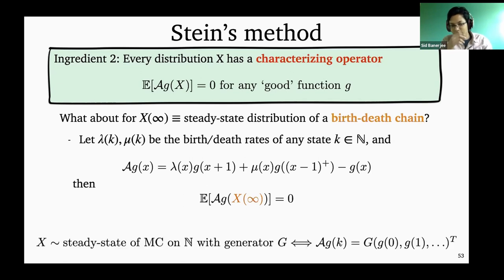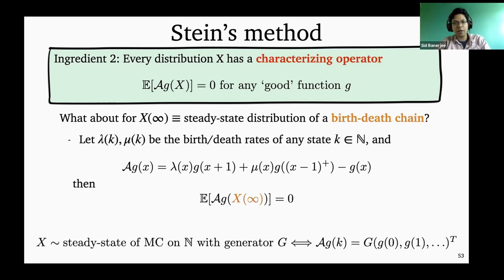It's easy to see, just by thinking about the definition of a steady state distribution, that the expected value of this operator for the steady state distribution is zero for any reasonable function G. More generally, for any continuous-time Markov chain with an associated generator — and you can also define this for discrete time or continuous time continuous space settings — the characterizing operator for the steady state distribution is always just applying the generator to the function G(x).